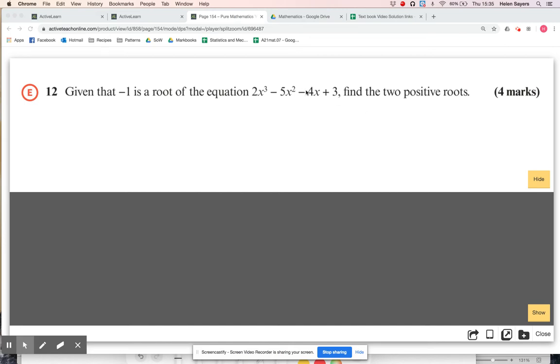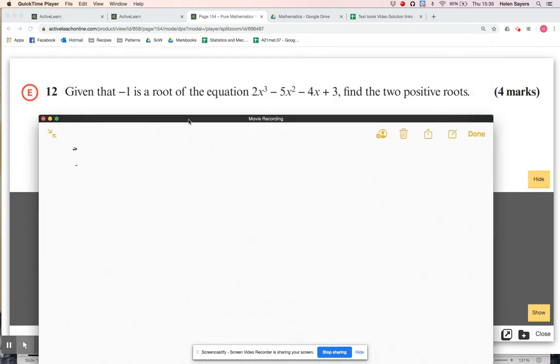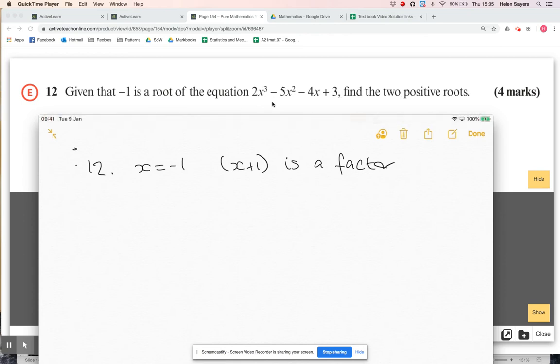I could use factor theorem to try and find the others, but the fact they tell me that x equals minus one is a root makes me think I'm going to use the root they've given me. If x equals minus one is a root, that means x plus one is a factor. So I'm going to factorize this to x plus one times a quadratic, and then find the roots of the quadratic. There's three roots to this cubic: minus one, and then the two that we need to find.